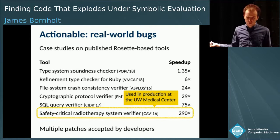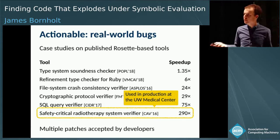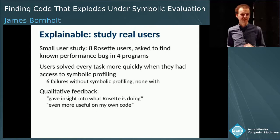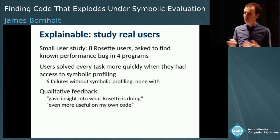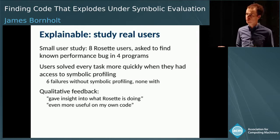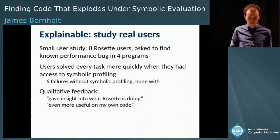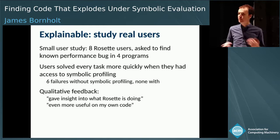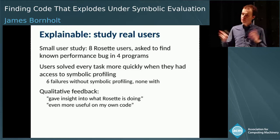The real question for you is: can you find bugs using a profiler like this? To investigate, we ran a small user study. We collected a group of Rosette programmers, gave them code I had written with known performance issues, and asked them to find those issues. Users were able to solve every task more quickly when they had access to our tool. When they didn't have symbolic profiling, there were six cases where they just couldn't find the performance issue — whereas with our tool, they never had that problem. Qualitatively, people said that for the first time they actually understood what Rosette was doing by looking at the profiler output.